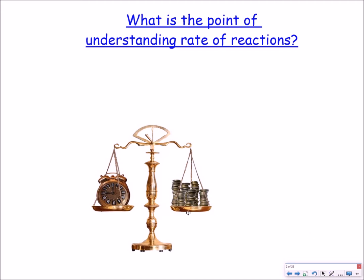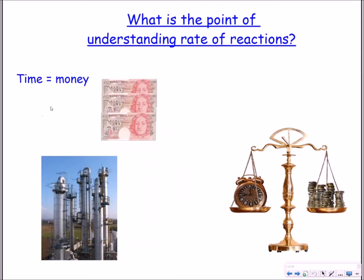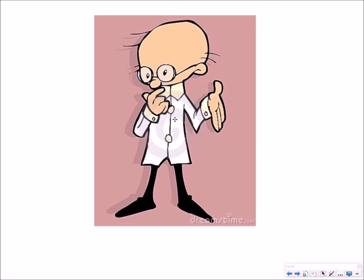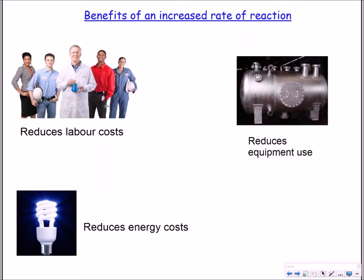Rates of reactions are important because time is an important entity, especially in industry, because time is money. So scientists in this field discover ways of increasing the rates of reactions so that you spend less time making something. The overall benefits of this is that it reduces the cost of labour, reduces wear and tear on equipment, and reduces energy costs.